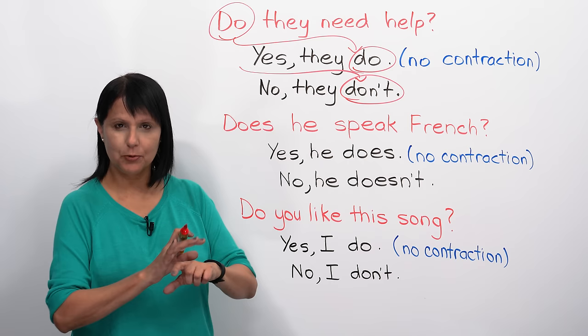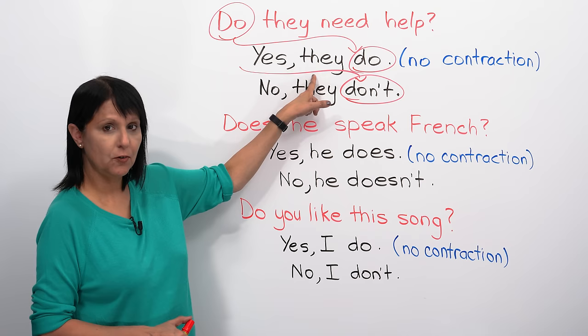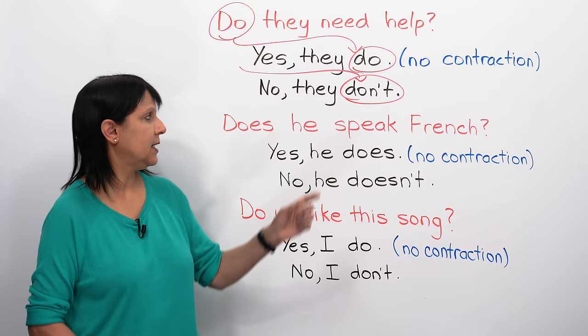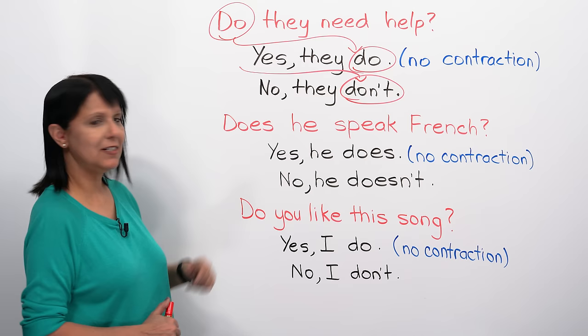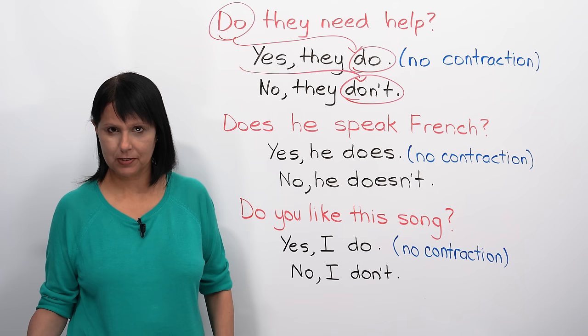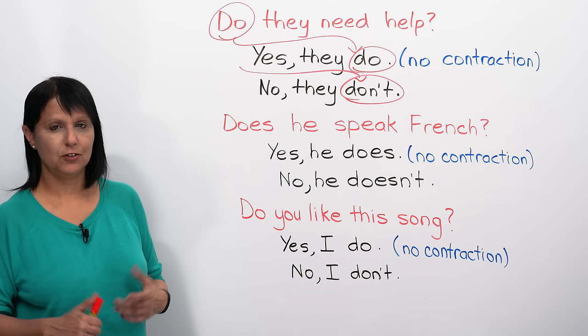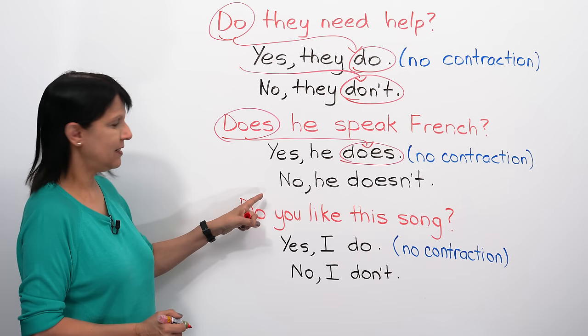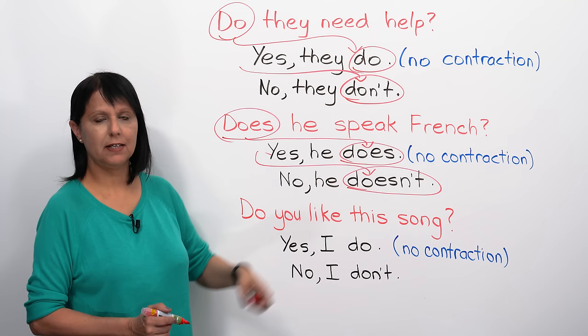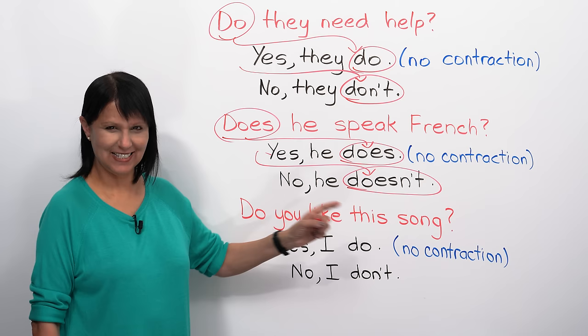The important thing to remember is that in the affirmative or positive answer, we cannot shorten it - there is no way to shorten that correctly. So we have to say yes, they do, but in the negative we can say no, they don't. Let's look at another example: does he speak French? How did it start? Does. So our options are: yes, he does, or no, he doesn't.